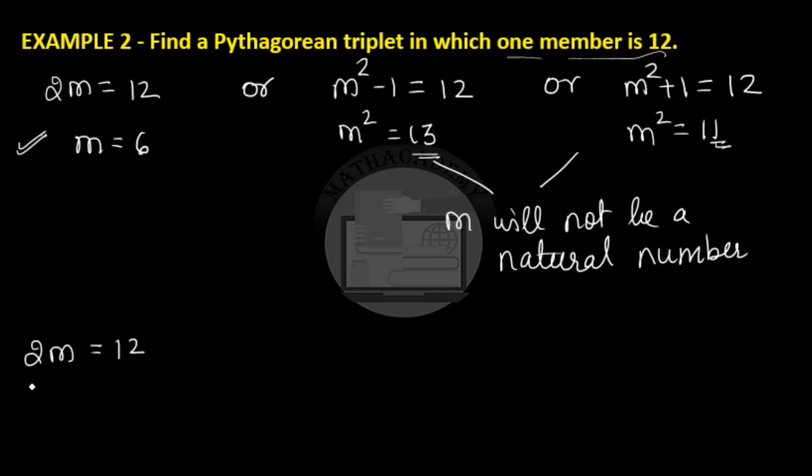m² - 1 = 6² - 1 which is 35. And m² + 1 = 6² + 1 which is 37. And hence your Pythagorean triplet is 12, 35 and 37, and 37 being the hypotenuse. 12 and 35 are the two legs of the right-angled triangle.